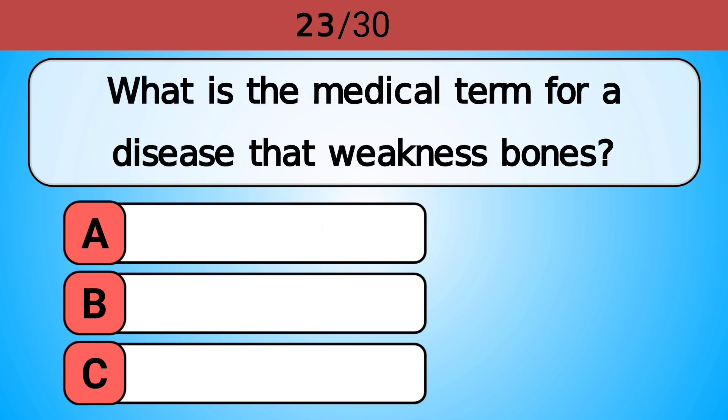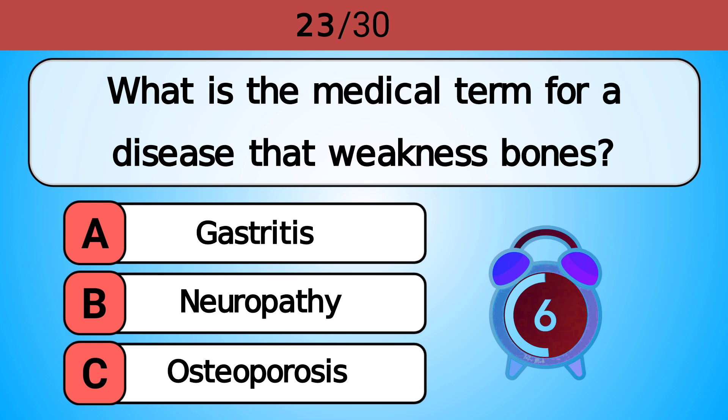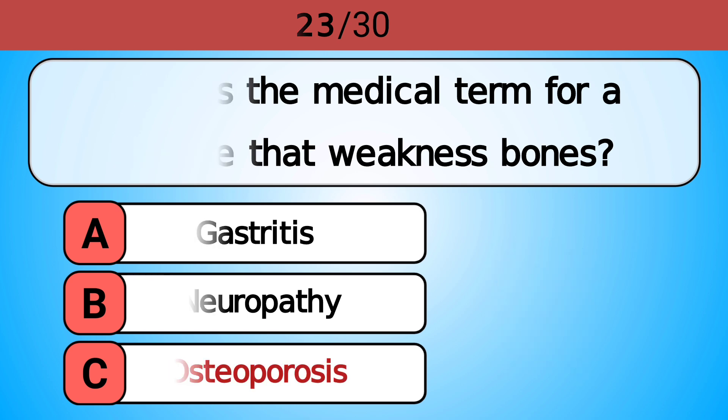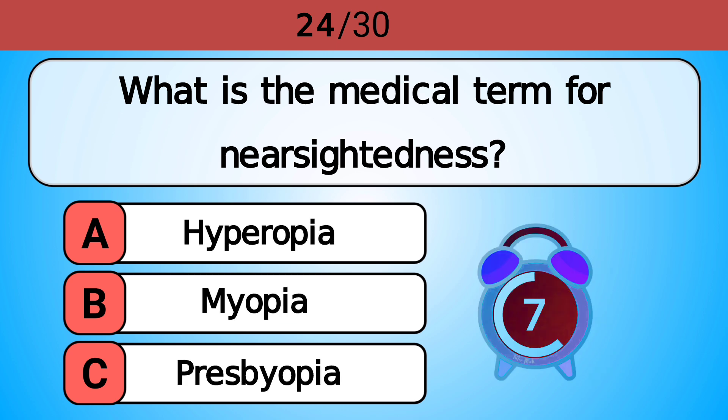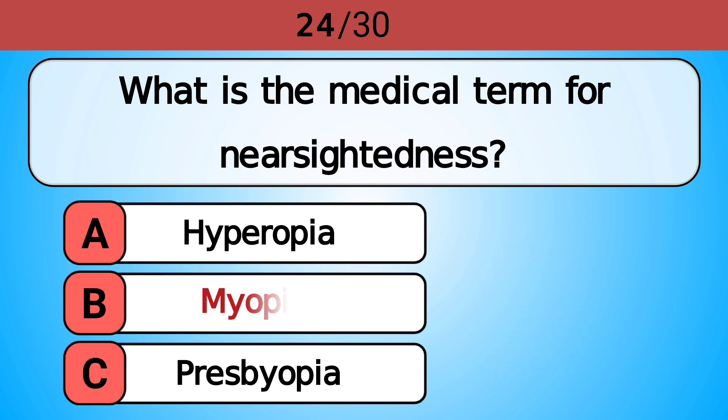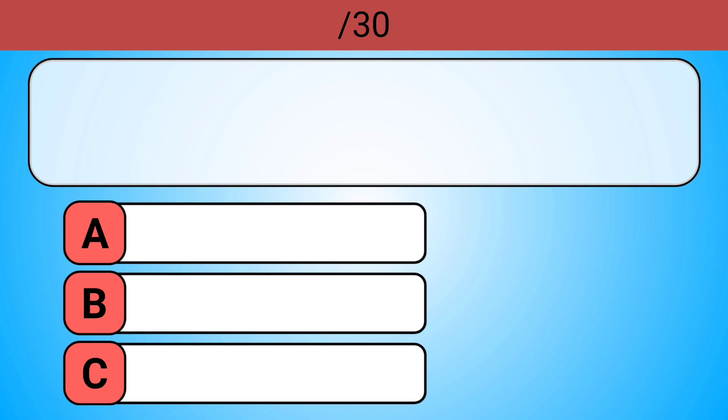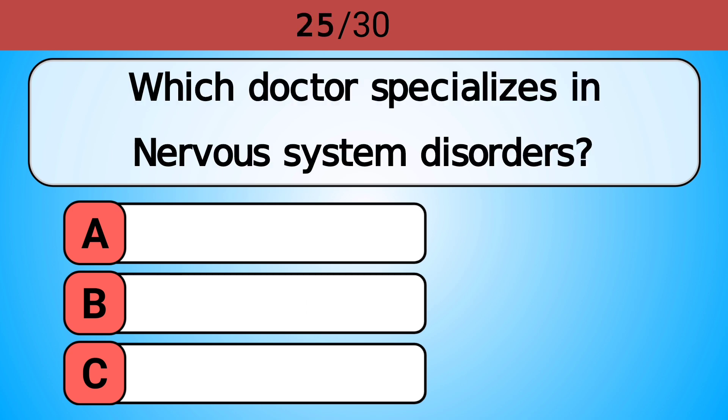What is the medical term for a disease that weakens bones? Answer C, osteoporosis. What is the medical term for nearsightedness? Answer B, myopia.